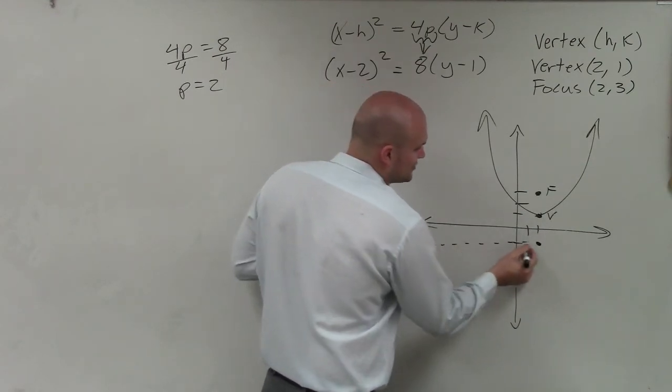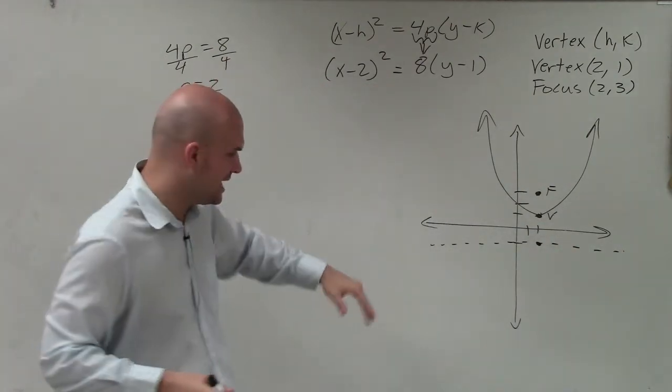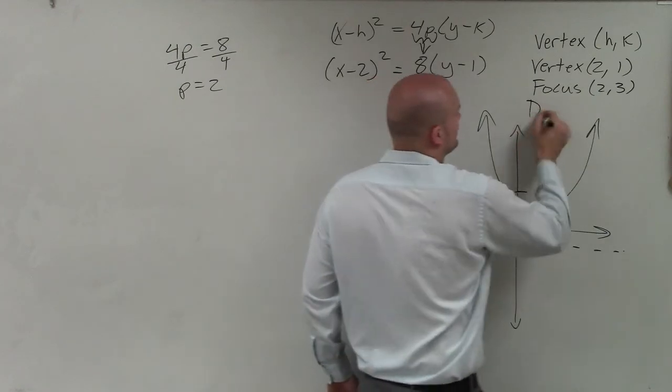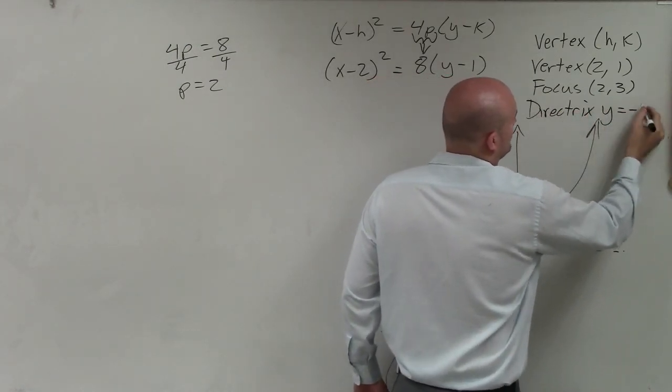So therefore, but remember, the directrix is a dotted line. It is not a point. So therefore, I have a horizontal line at the value -1. So my directrix is going to be y = -1.